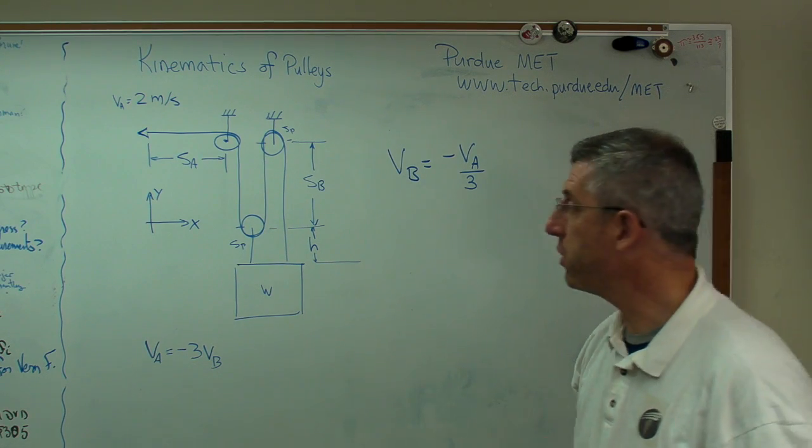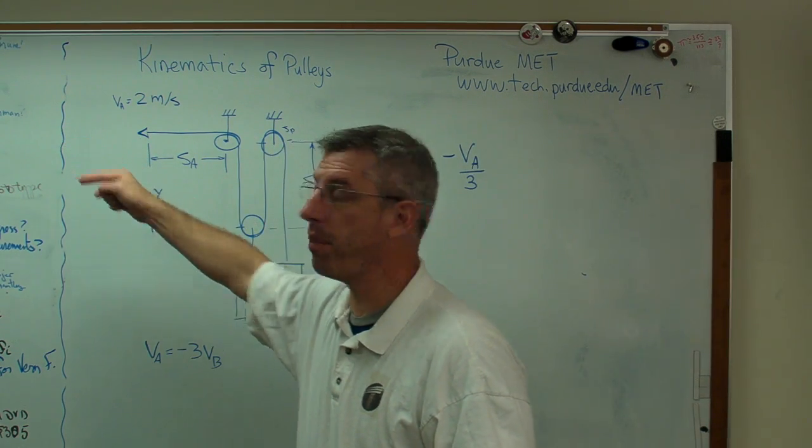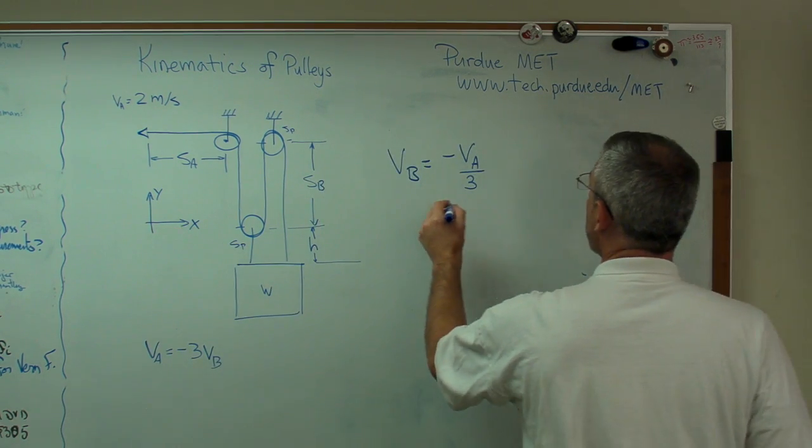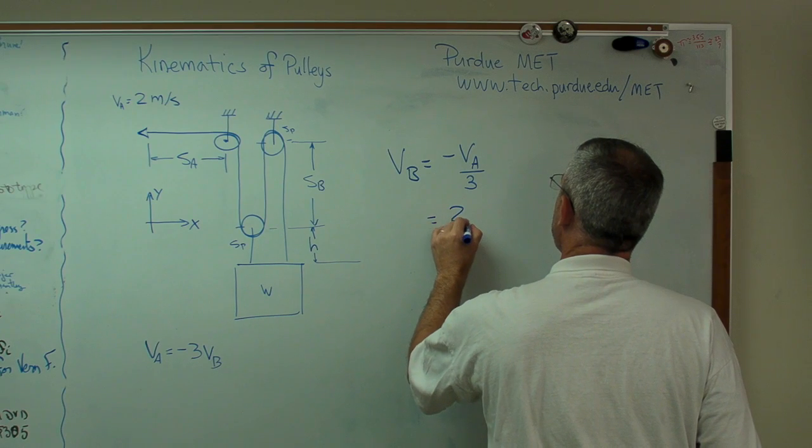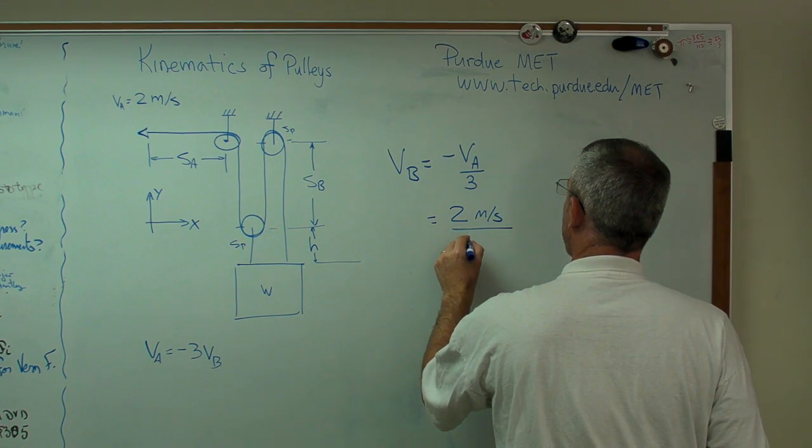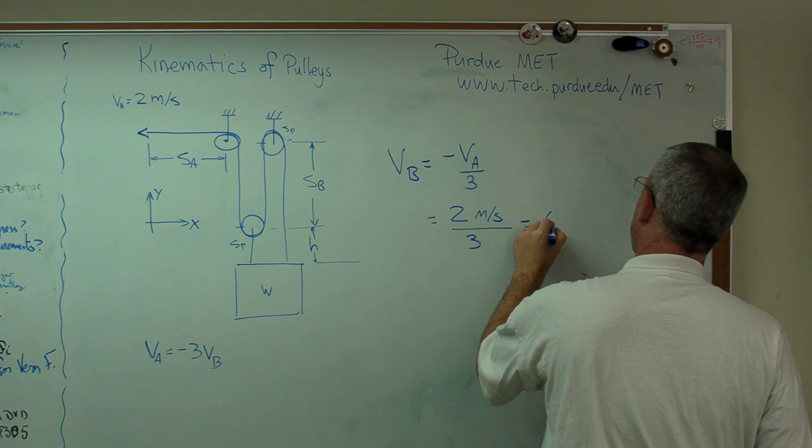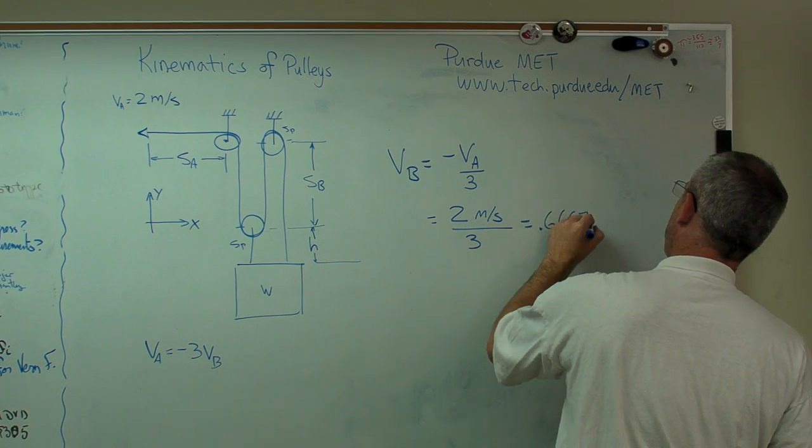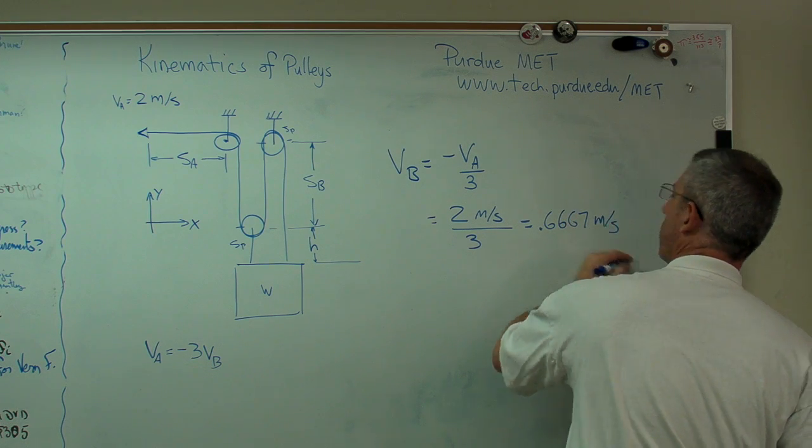So that's going to be 2 meters per second over 3. And if you want, you can call that 0.667 meters per second is VB.